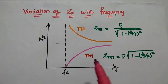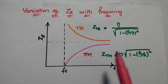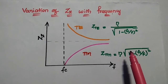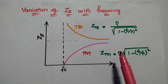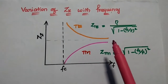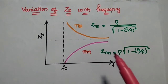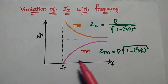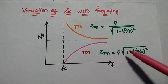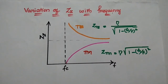Next, we compare the wave impedance values for TE waves and TM waves with respect to frequency. Whenever frequency increases, the wave impedance for TE waves decreases, while for TM waves it increases. This diagram illustrating these trends is very important.